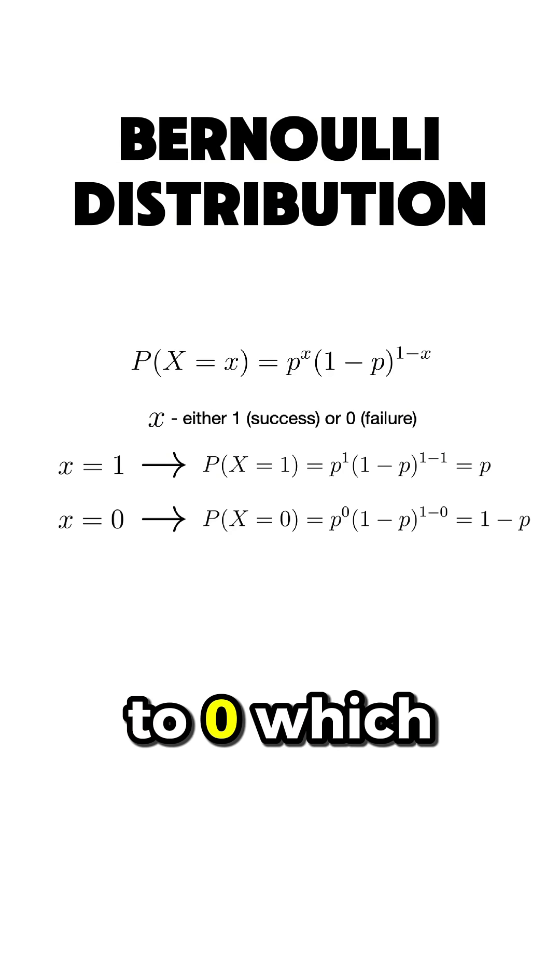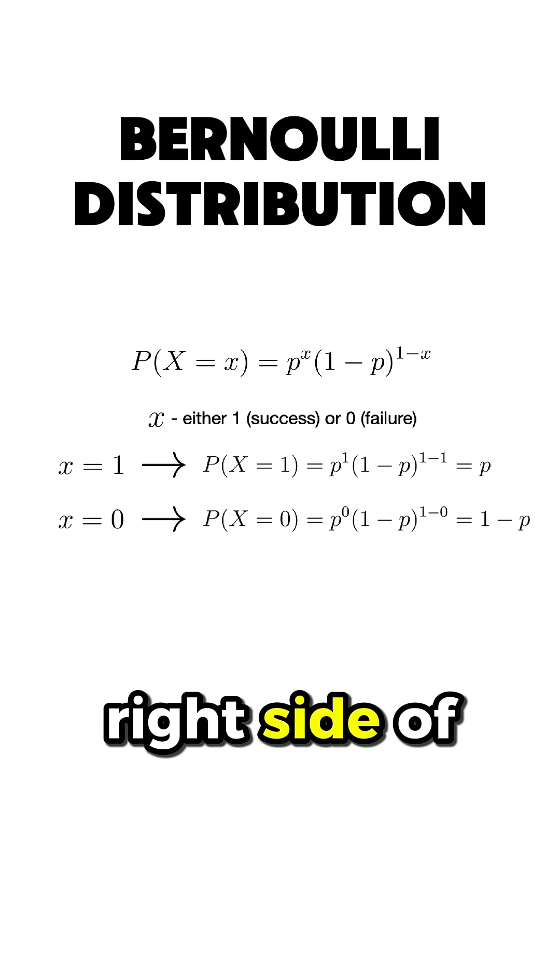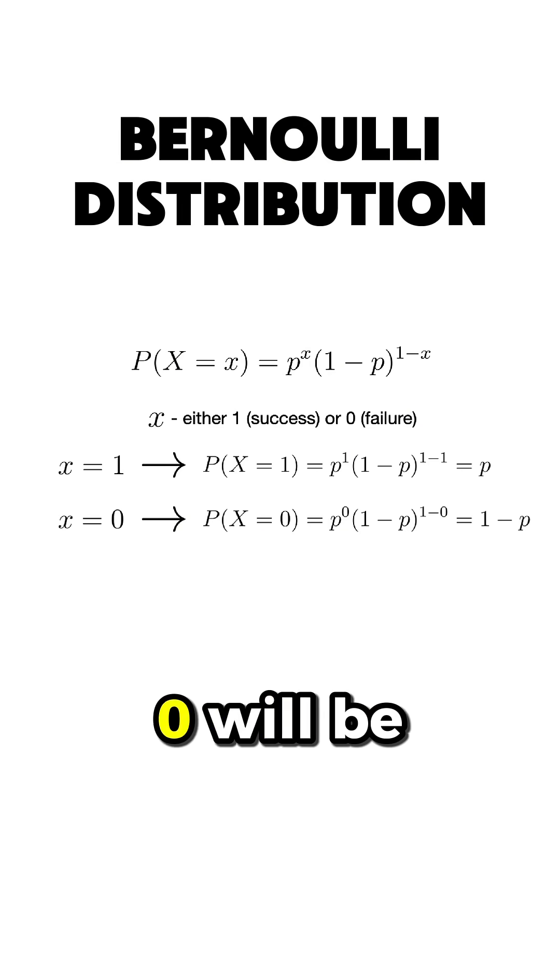Otherwise, if x equals to 0, which means failure, then we remain only with the right side of the equation. Since p to the power of 0 will be 1, so P(X=0) will be 1-p,